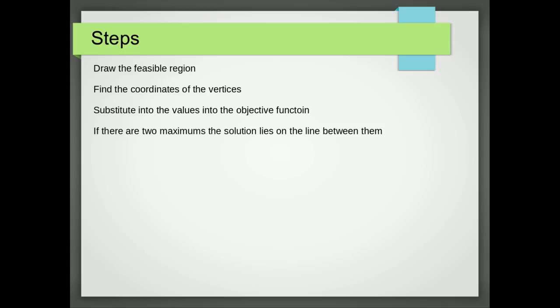So what are the steps we go through when solving one of these linear programming problems? Well, the first part is exactly the same as we did before. We draw the feasible region, we find the coordinates of the vertices, and we substitute the values of those vertices into the objective function.